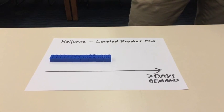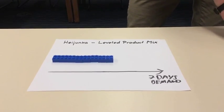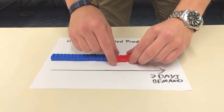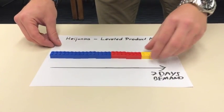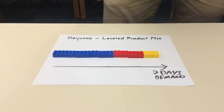In addition to this, you can also level the production mix. Without leveling, production would look like this. The company would look at the demand needed for one week and base their production on this demand. Let's say demand is the highest for product blue, and therefore it is produced first.